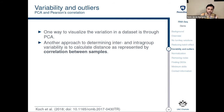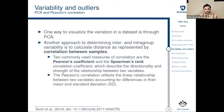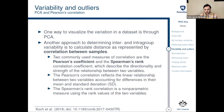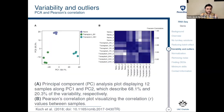Another approach for determining inter- and intragroup variability is to calculate the distance, as represented by the correlation between samples. You normally use something like the Pearson coefficient or Spearman rank for that. The Pearson's correlation reflects the linear relationship between two variables, accounting for differences in their mean and standard deviations. The Spearman's rank correlation is a non-parametric measure using the rank values of the two variables. These things are extremely easy to implement in R if you know which functions to use, and it is much more important for you to learn how to read the results than to execute the calculations, which is trivial using a computer.